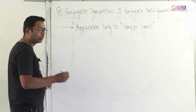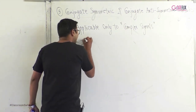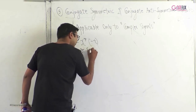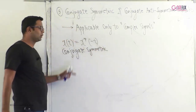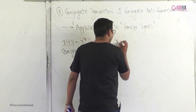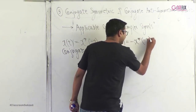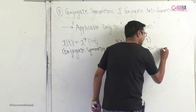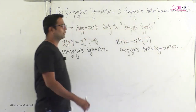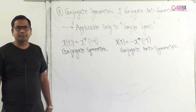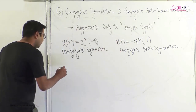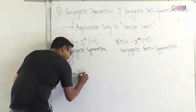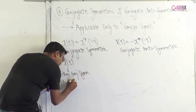A signal is conjugate symmetric if x(t) = x*(−t), where * denotes the complex conjugate. A signal is conjugate anti-symmetric if x(t) = −x*(−t).